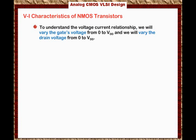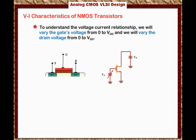Looking at the diagrams, we have an NMOS transistor where the gate is connected to a variable voltage and the drain is connected to a variable voltage, while the source is grounded. Here is the 2D structure for the transistor, with the source connected to ground, the gate to a variable voltage, and the drain to a variable voltage.